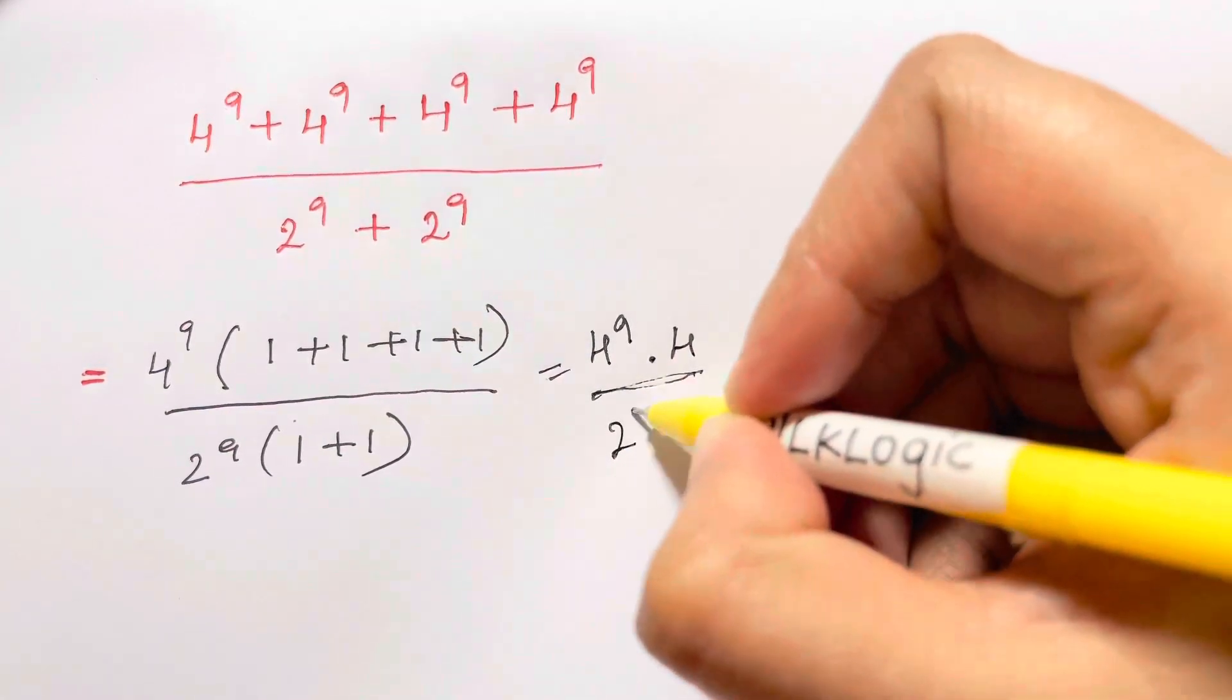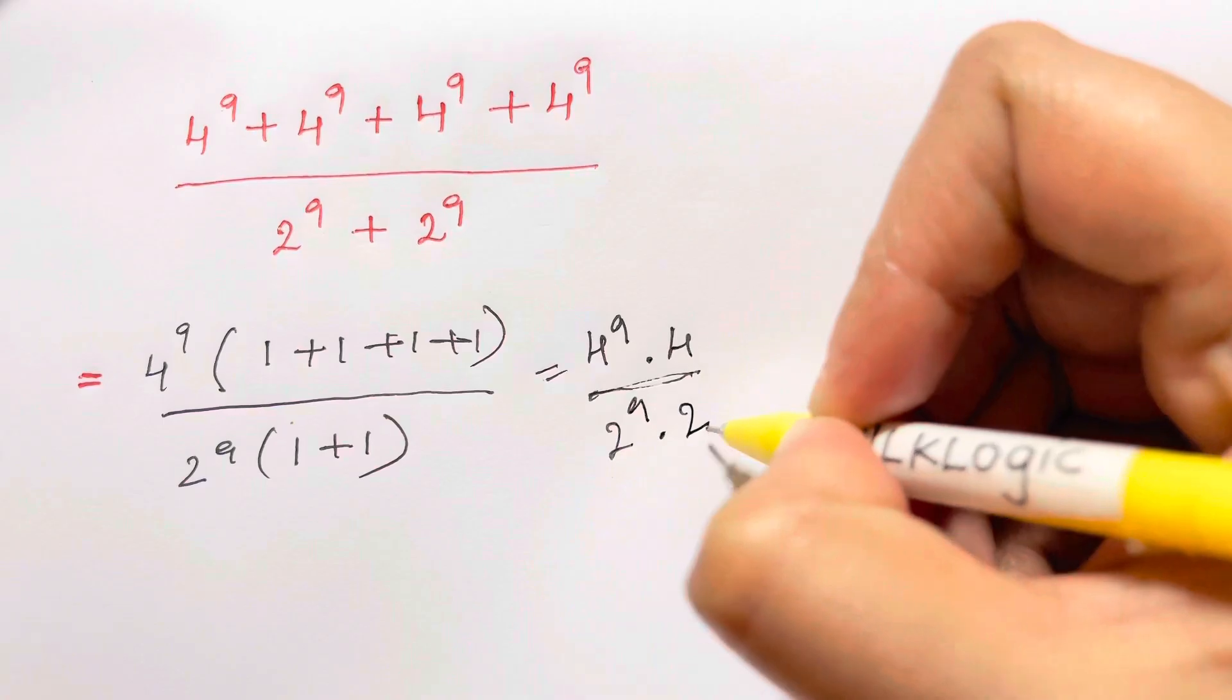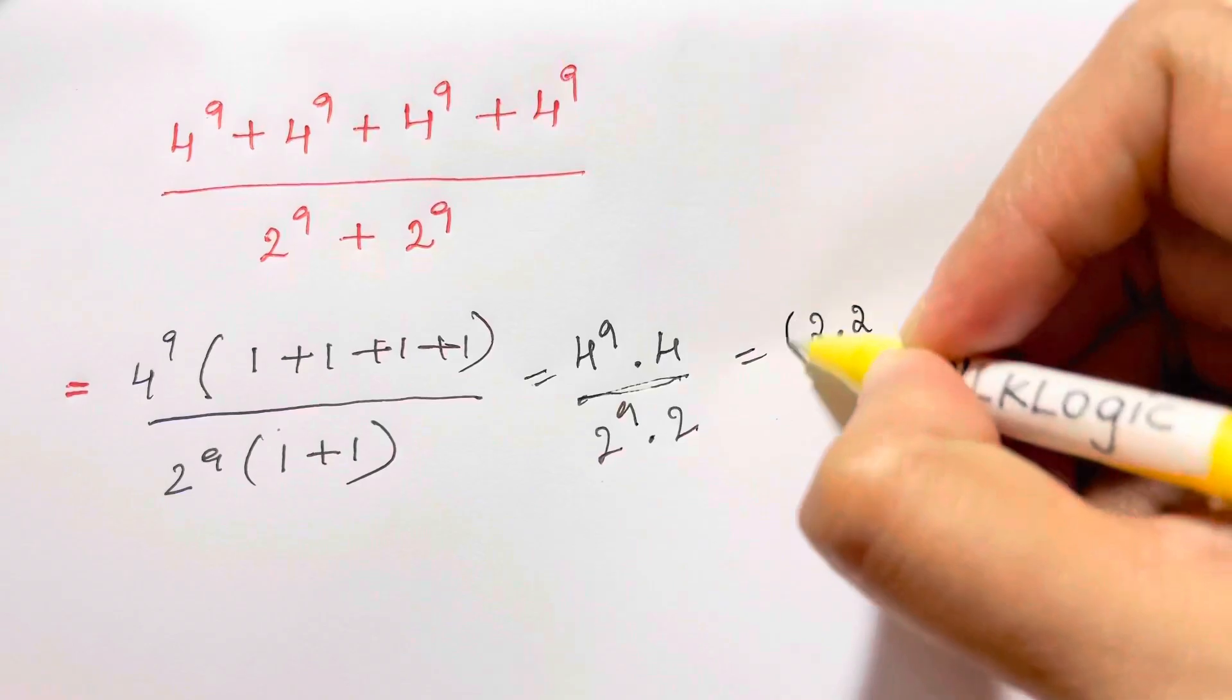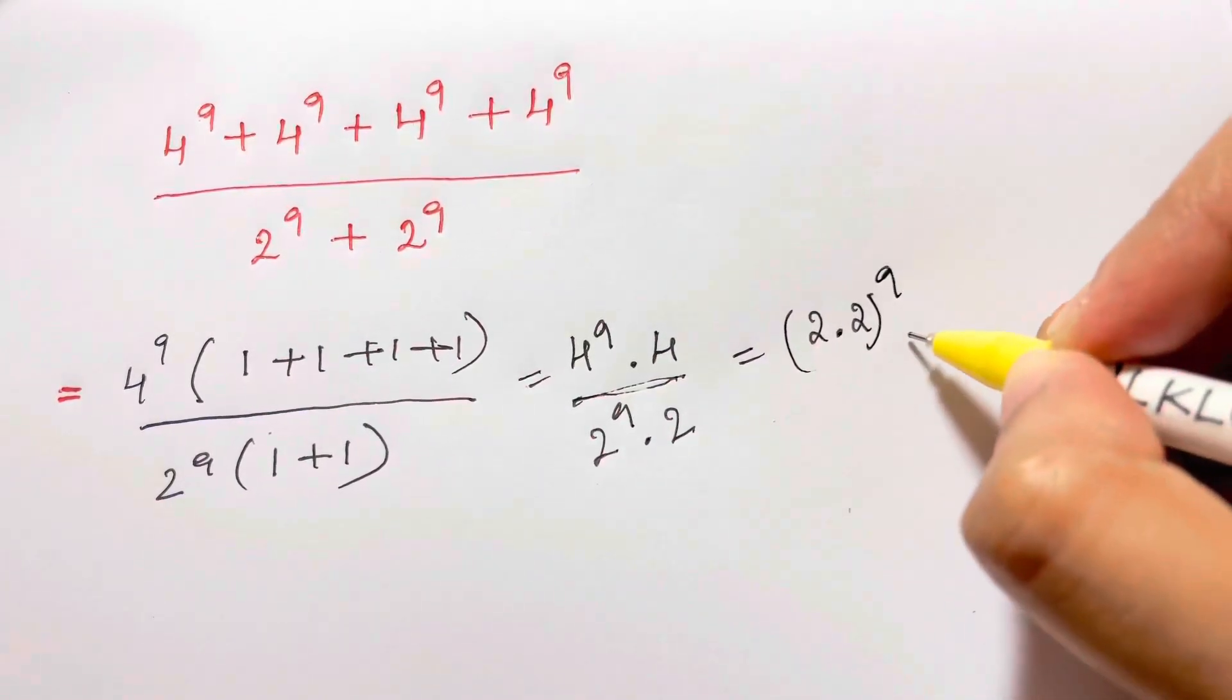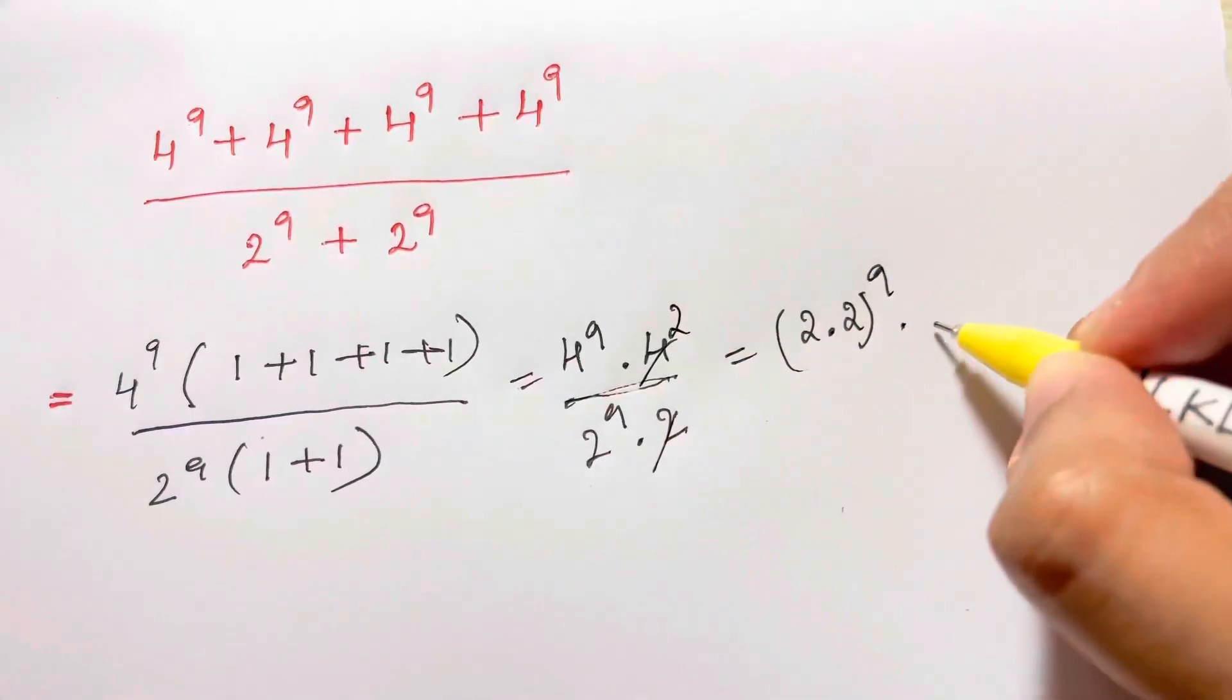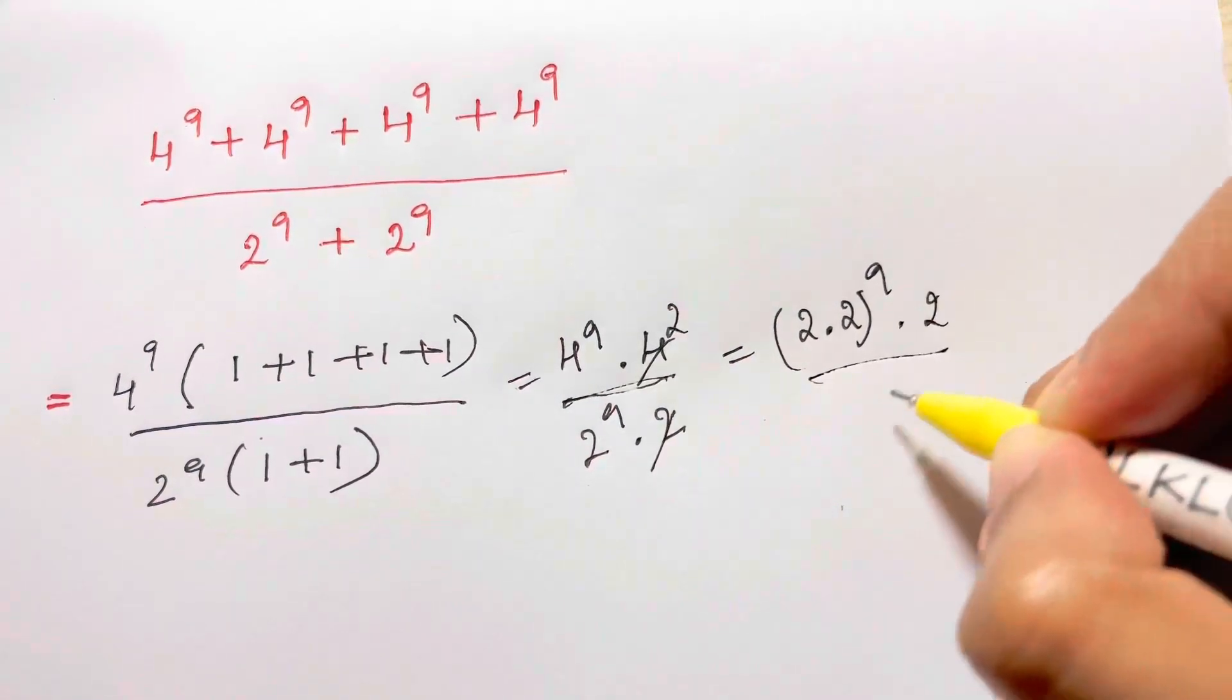2 to the 9th times 2. Now this 4 to the 9th can be written as 2 times 2 whole to the power of 9. Times this 2 times 2 gives us 4, so you have a 2 here, over 2 to the 9th.